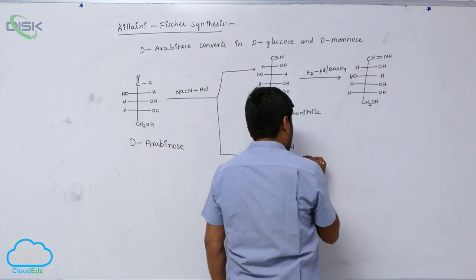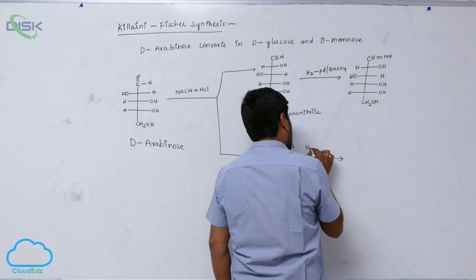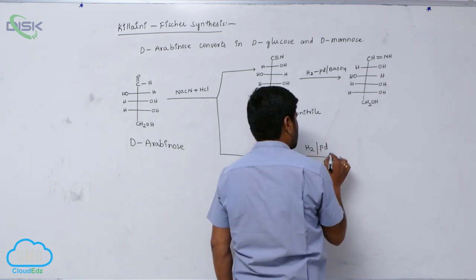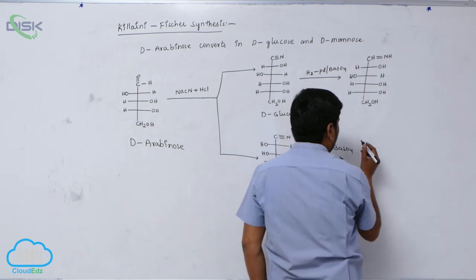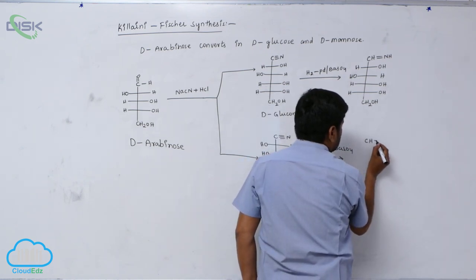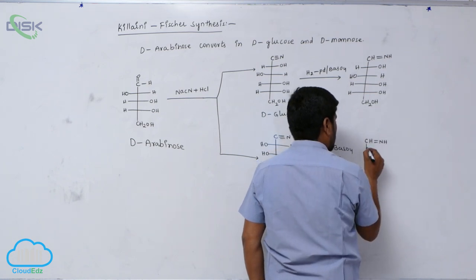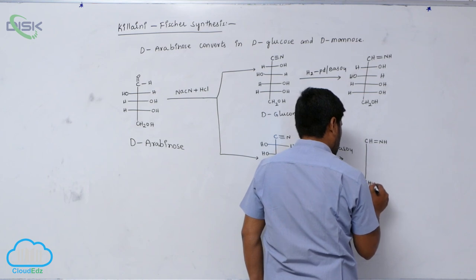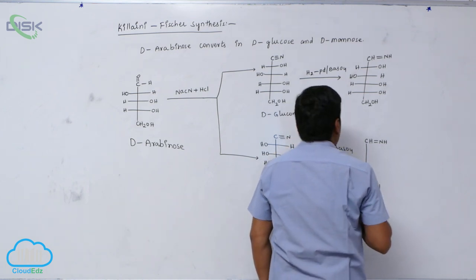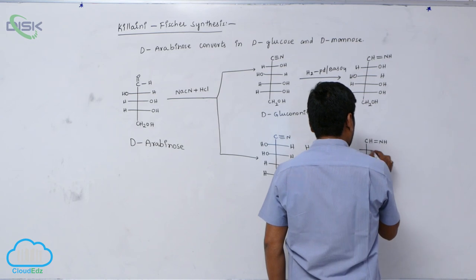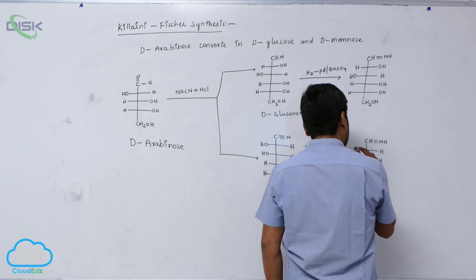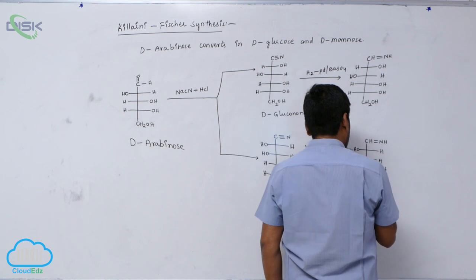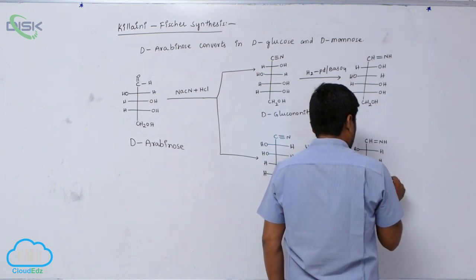The same way, with hydrogen in presence of palladium barium sulphate, it also forms imine. CH2OH, H, H, here is also H OH, then here is OH, then here is also OH.